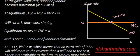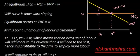Equilibrium occurs at the point where VMP equals W, and at this point, N* amount of labor is demanded. If N is less than N*, for example at N1, VMP is greater than W — the value of marginal product is greater than the cost. So it is always better for the entrepreneur to add more workers. You can think of the VMP curve as what is being added to revenue, while the wage curve represents the cost.